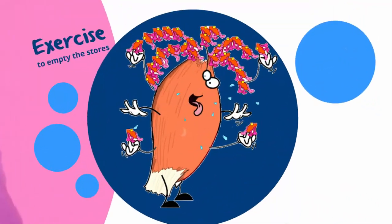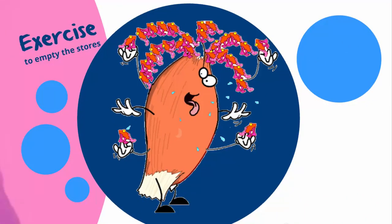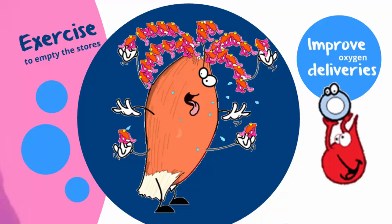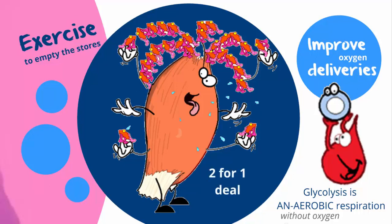This is what exercise does. The other benefit of a little sweating is it improves blood flow and thus oxygen delivery. Since the glycolysis pathway is favoured under circumstances where there is less oxygen, exercising is a 2-for-1 deal.